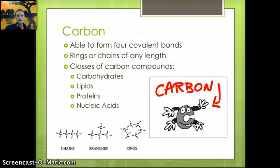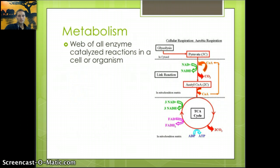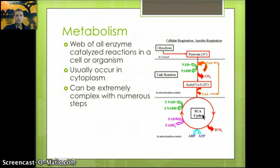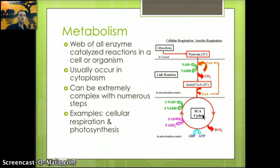Within molecular biology, the first subtopic is metabolism—a web of reactions in a cell or organism. An example is aerobic respiration, a series of small steps. Metabolism is a pathway that converts one type of molecule into another, generally occurring in the cytoplasm. It can be extremely complex with many steps. Examples include cellular respiration and photosynthesis.